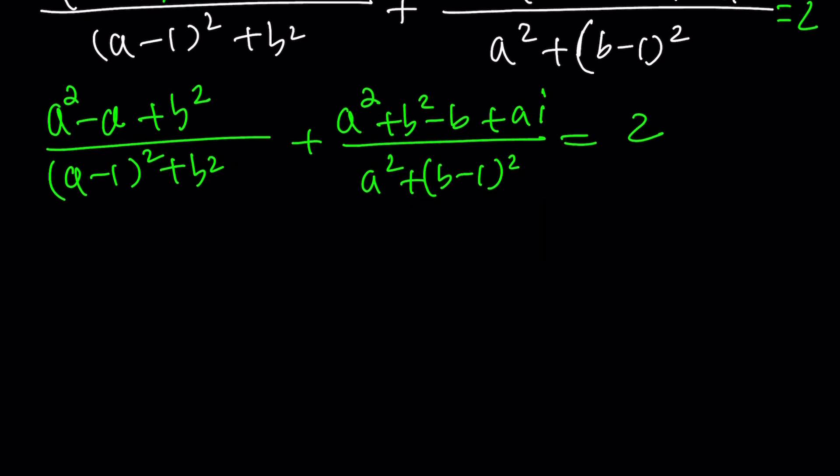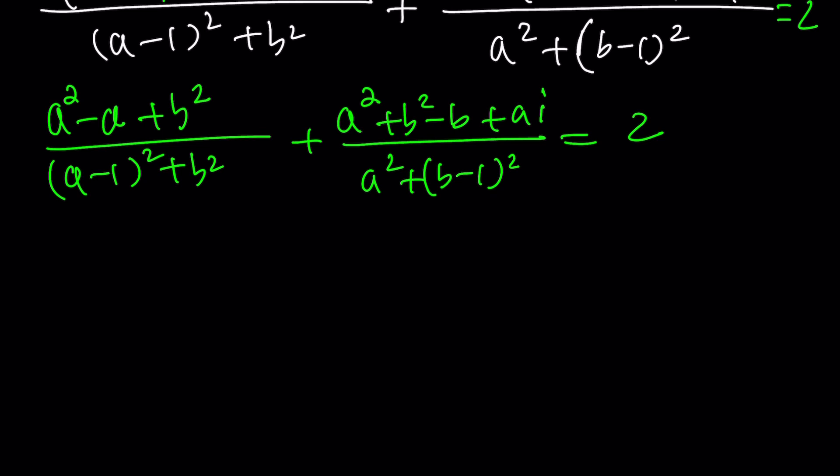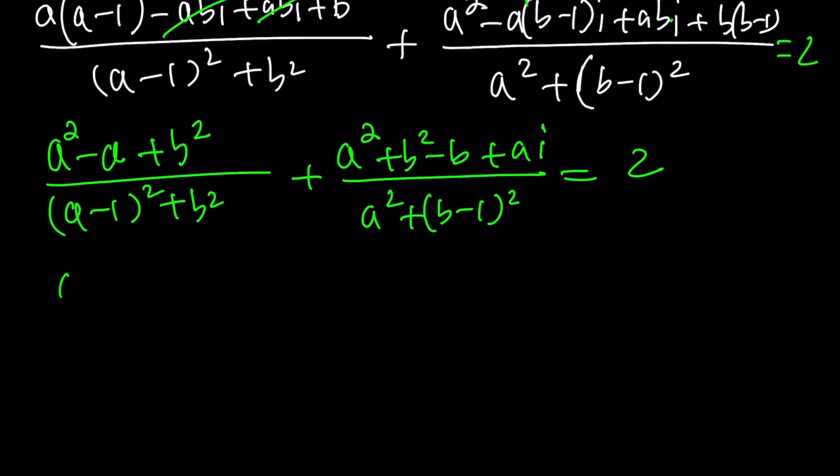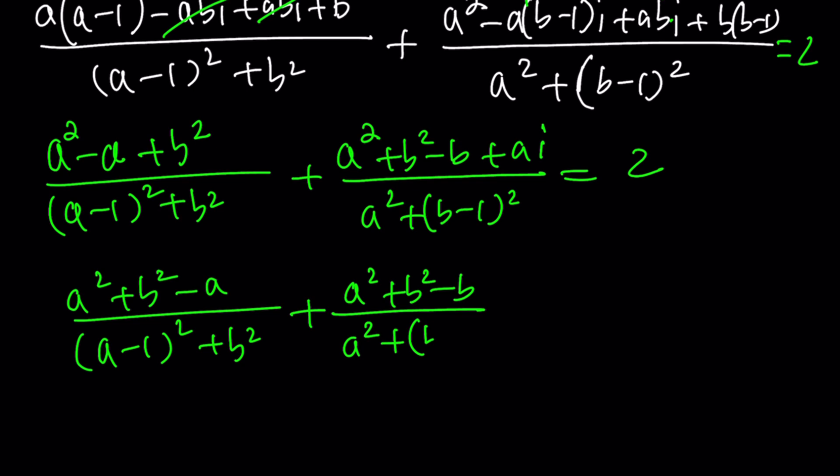So, there's a couple things. Do you need to make a common denominator? I don't think so. That will be complicated, don't you think? At least in this form. But you can do the following. Separate the real parts completely. Maybe I should put the squares together. Like this. A squared plus B squared minus A over A minus 1 squared plus B squared, plus another real part. A squared plus B squared minus B over A squared plus B minus 1 squared. And then plus A over A squared plus the quantity B minus 1 squared. And that's multiplied by I. And this is equal to 2.